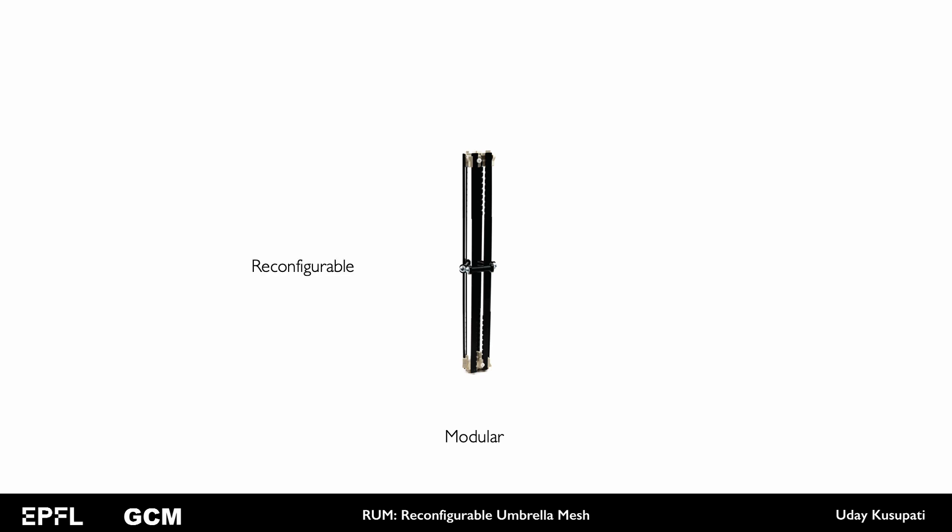Each individual unit is reconfigurable. The compact state is stress-free. This makes fabrication, assembly and reconfiguration easier. The cells are all identical, so during fabrication, they have no information of the deployed shape programmed into them. Let us look into two important aspects of the cell: deployment and reconfigurability.